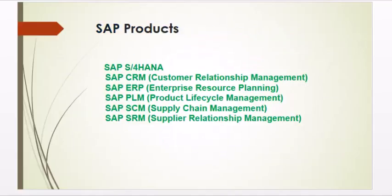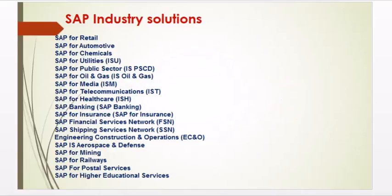SAP offers several products including SAP HANA, CRM, ERM, PLM, SCM, and SRM. SRM stands for Supplier Relationship Management, SCM stands for Supply Chain Management, CRM stands for Customer Relationship Management, and ERP stands for Enterprise Resource Planning. SAP is used across many industries including retail, automotive, chemicals, telecommunications, and healthcare.